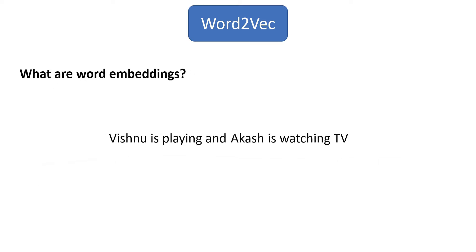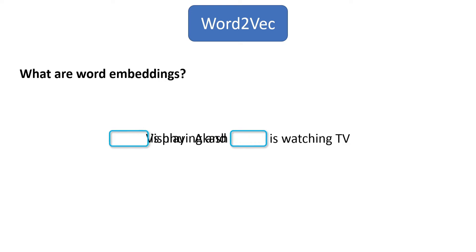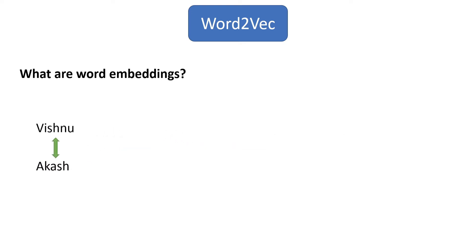Let's say we have this sentence: Vishnu is playing and Akash is watching TV. In this sentence, if you take these two subjects, which are Vishnu and Akash, and swap them in this sentence, still the sentence makes sense and the context remains the same. This indicates that these two words, Vishnu and Akash, are somewhat related to each other. So these two words should get similar embeddings or similar weightage. That is the idea behind word embeddings.